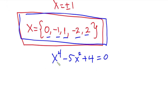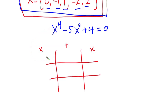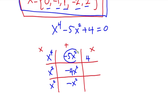All you need to do is construct a sample table. The operation signs are multiplication, then addition, then multiplication. We place x to the fourth power here, negative 5x squared here, and positive 4 here. If I multiply x squared by another x squared, I get x to the fourth power. And if I add negative 4x squared to negative x squared, I get negative 5x squared. Then multiplying negative 4 by negative 1 gives positive 4.